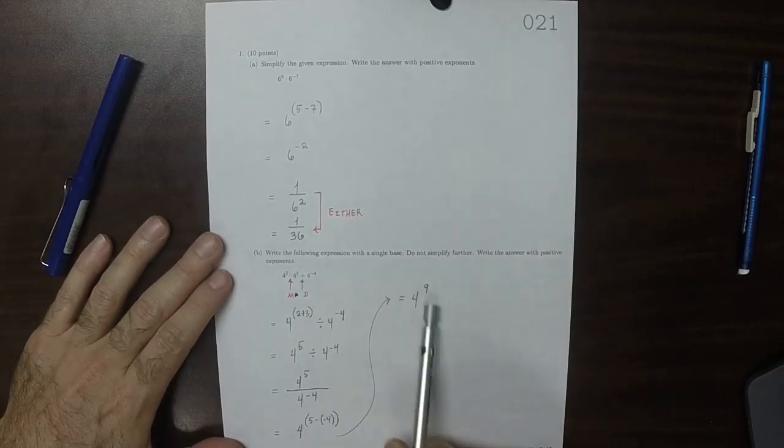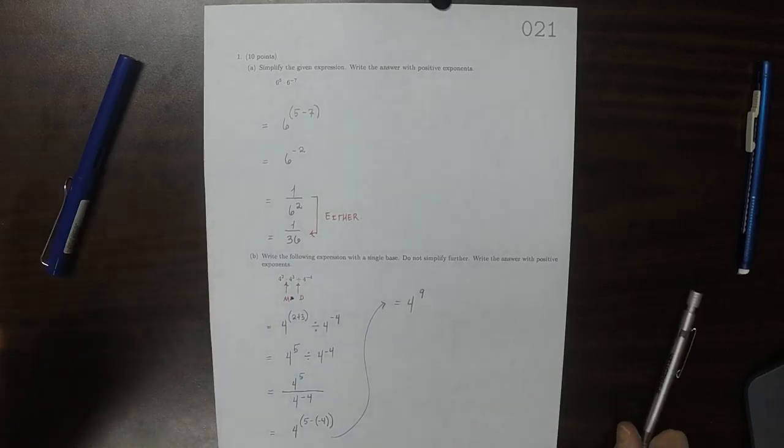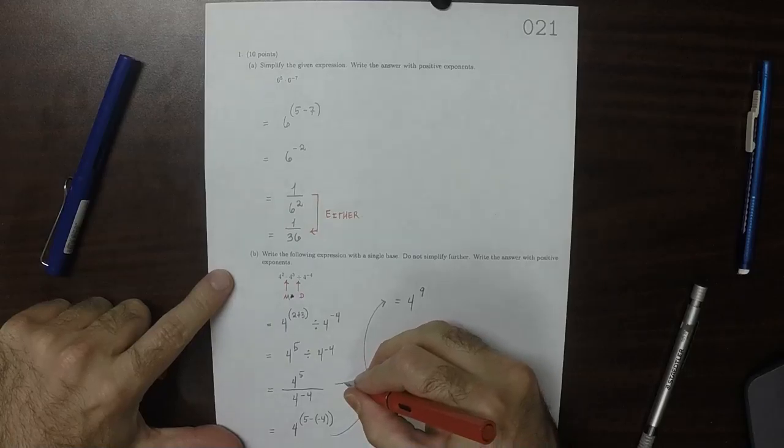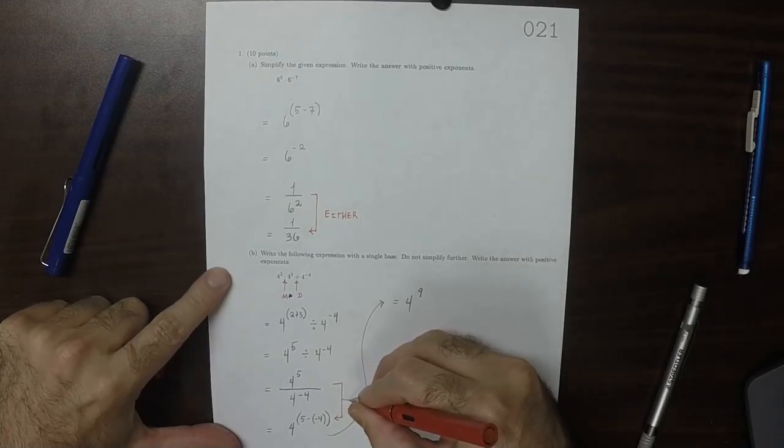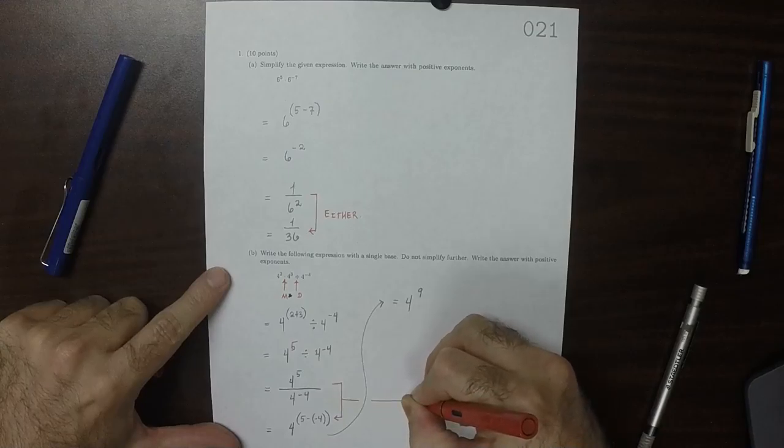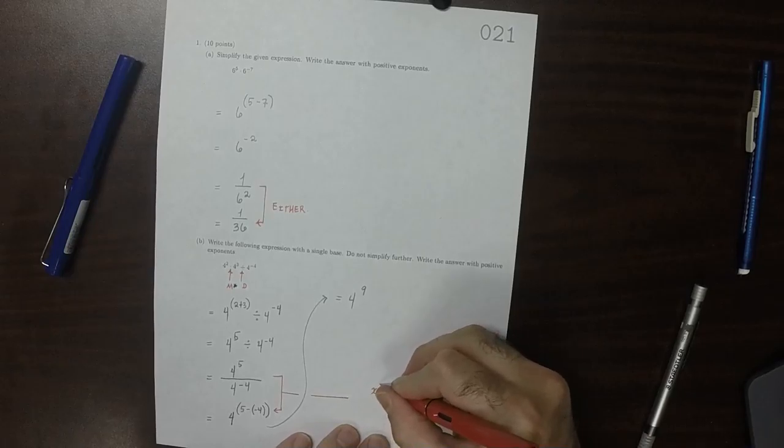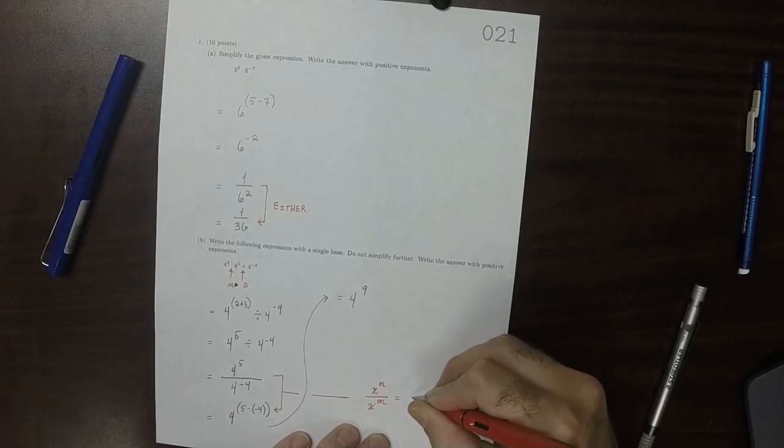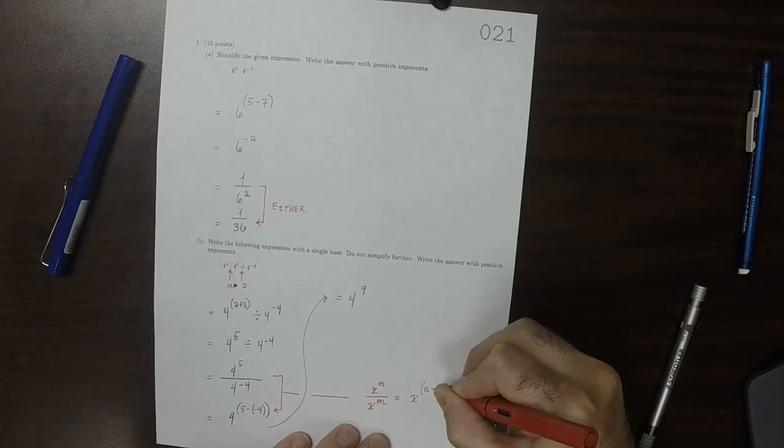And then it says write it in a single base. So that's what is requested. And to be clear, the step that went from here to here, what it used was that x to exponent n divided by x to exponent m is x to n minus m.